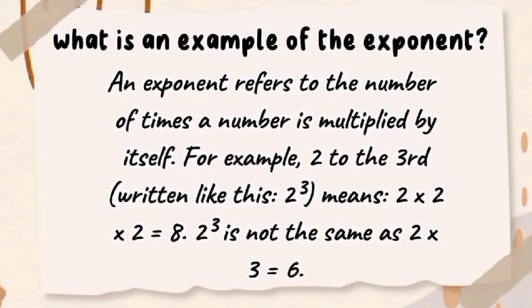What is an example of the exponent? An exponent refers to the number of times a number is multiplied by itself. For example, 2 to the third means 2 times 2 equals 4, 4 times 2 equals 8. 2 to the third is not the same as 2 times 3 equals 6.